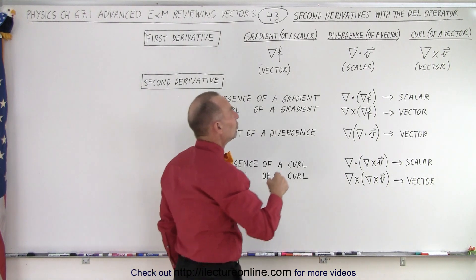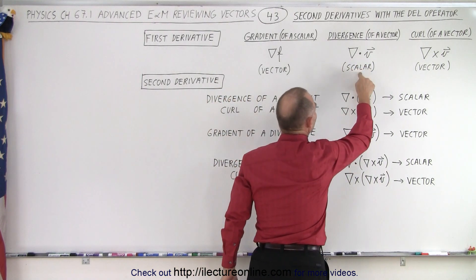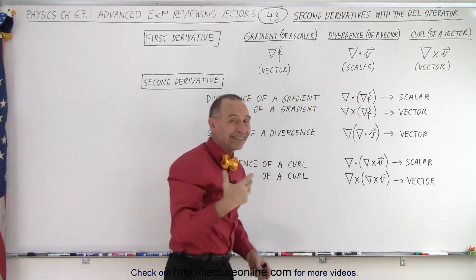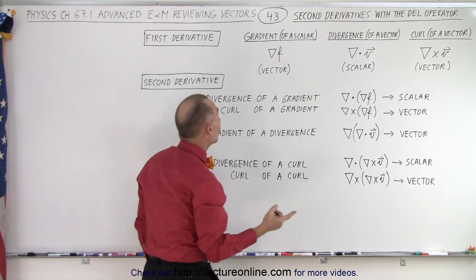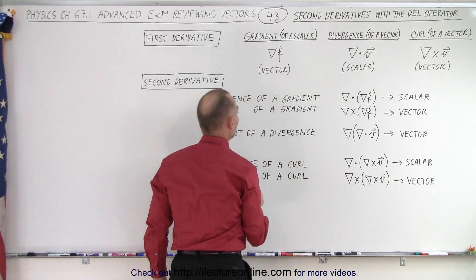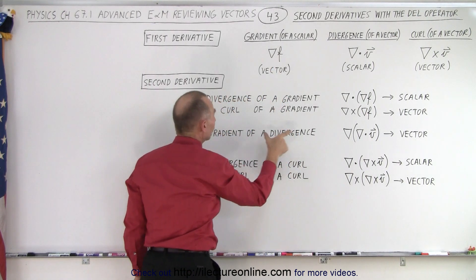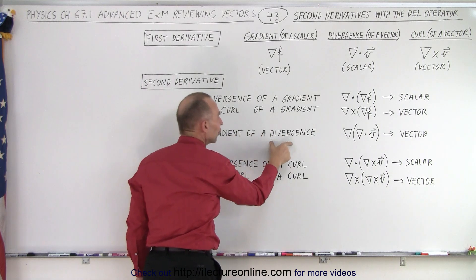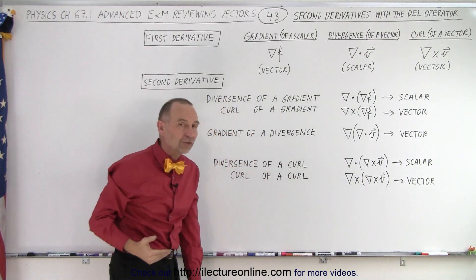Now if you do a divergence, you end up with a scalar, and there's only one secondary operation you can do, because only gradients can be done on scalars. So if you've done a divergence, you can only take the gradient of a divergence as the second operation.